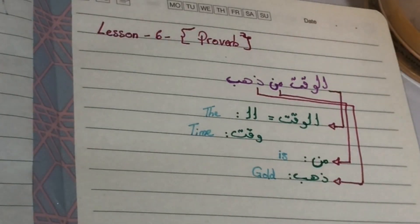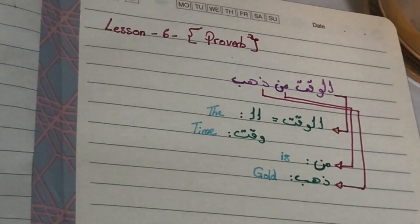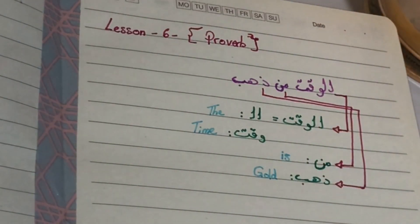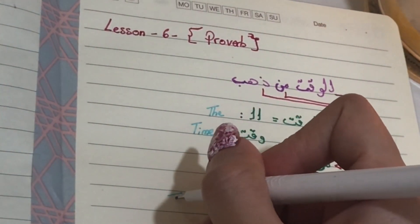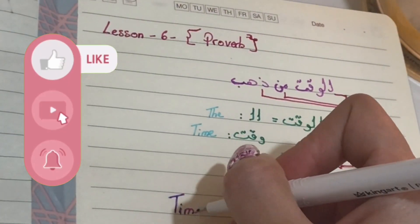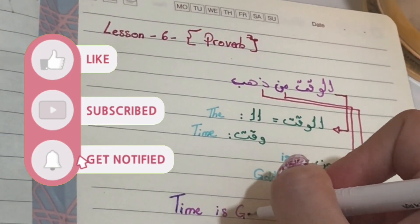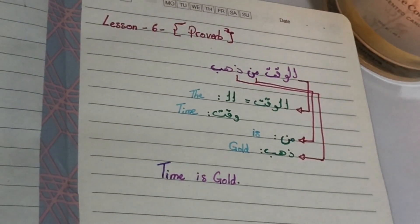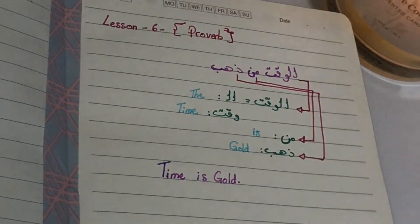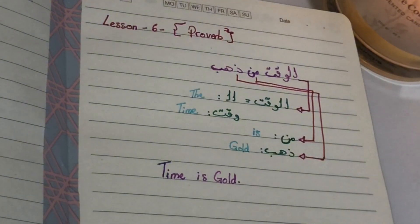I think by now you can translate it. Time is gold means time has value. Time is gold, the time is gold, doesn't matter, but al-waqtu min-zahab. Thank you for watching, bye.